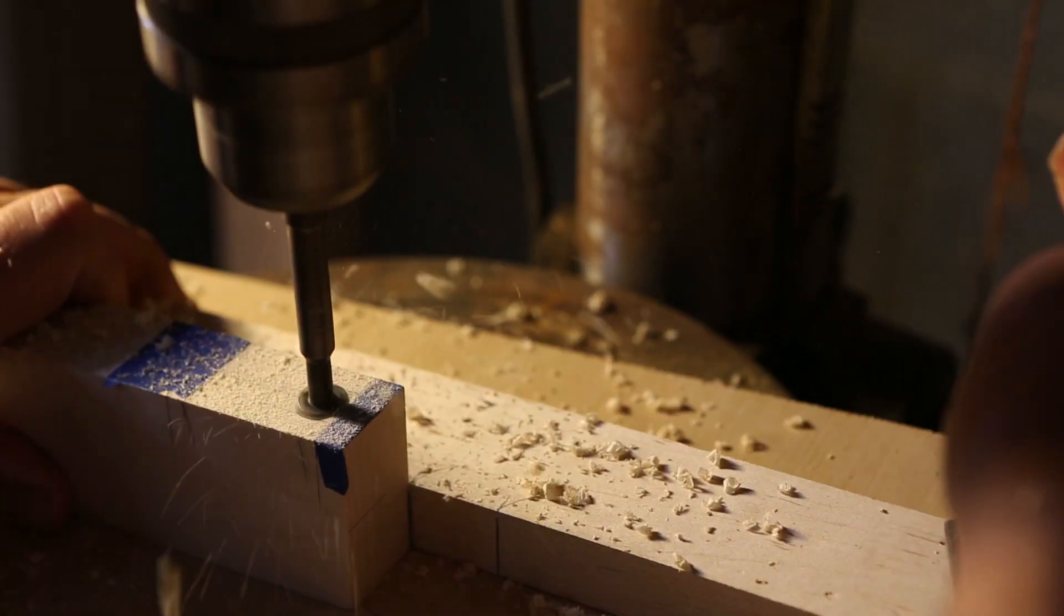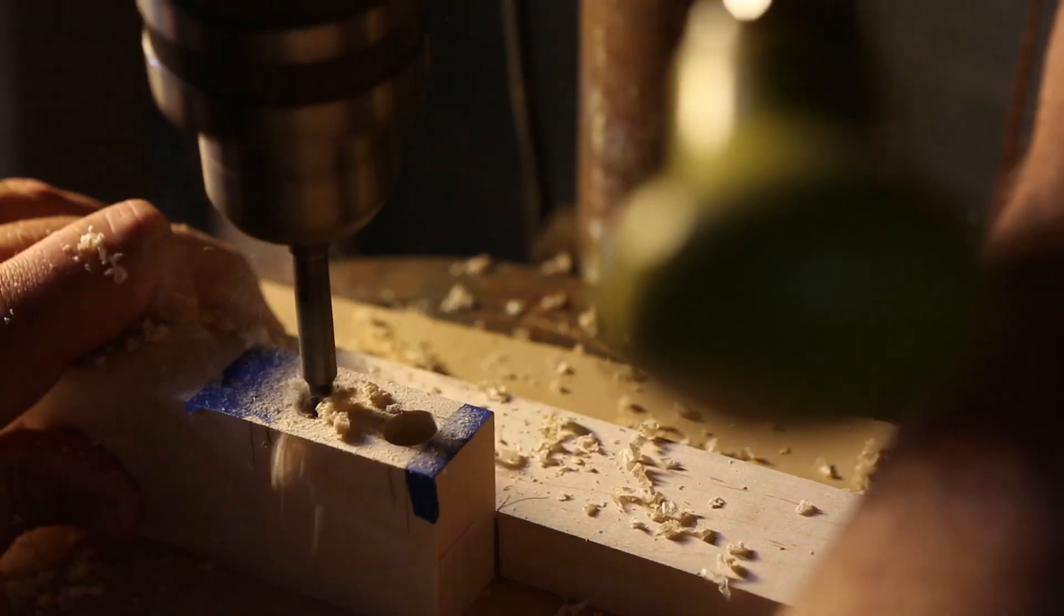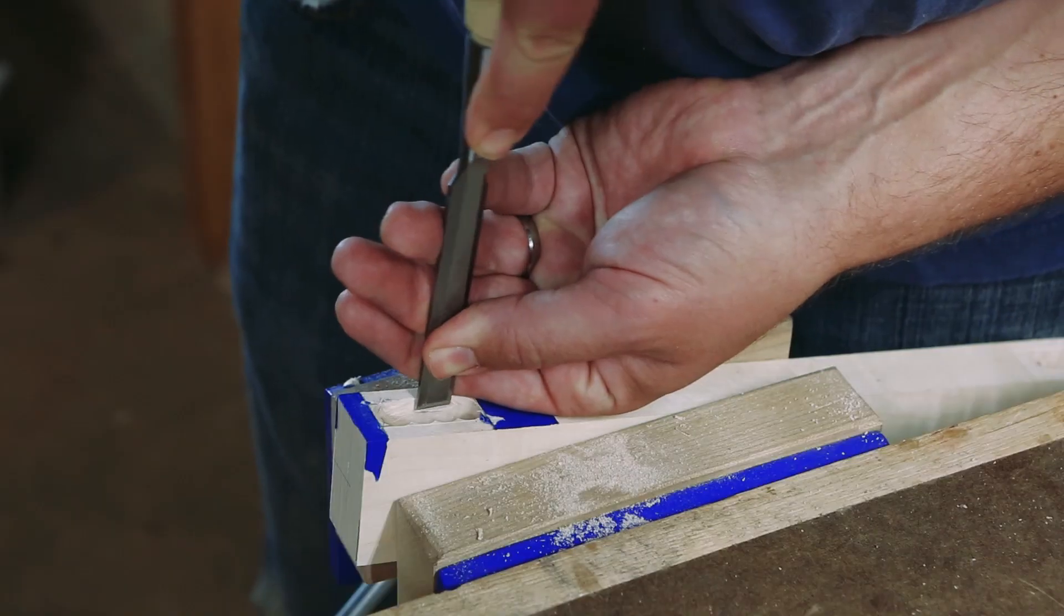Once I had the table at an angle, I hogged out most of the material with a Forstner bit, then cleaned up the mortises with a chisel.